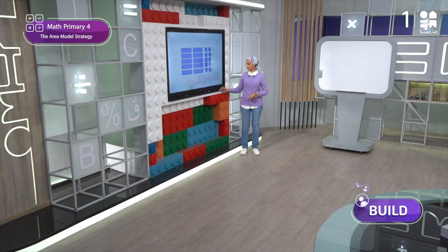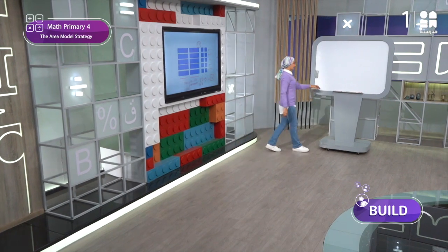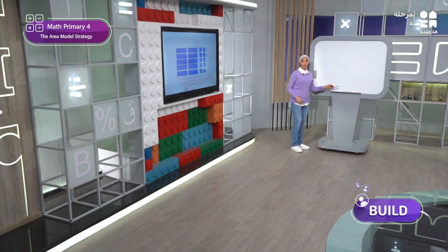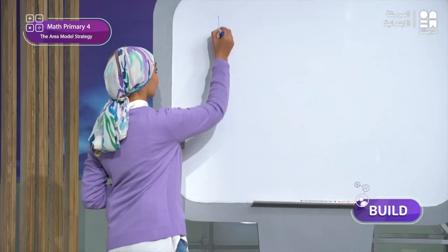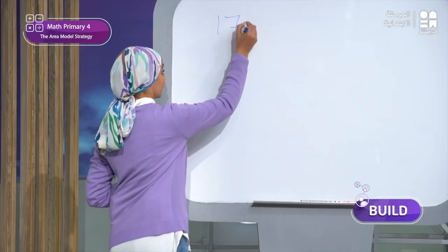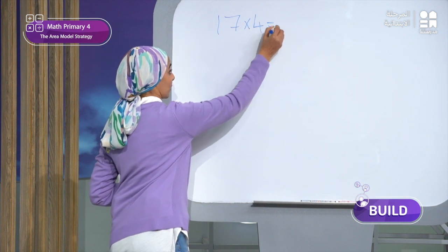Now let's solve problem number 2 all together on the board. Here we have 17 times 4. Let's draw it all together.